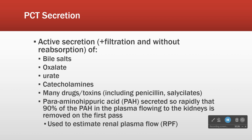Then there's a specialized one: PAH — para-aminohippuric acid — a specialized compound that we use to measure kidney function. It is fully secreted in the PCT, and I'll show you how that works and why it matters at the end of this talk. There's not a lot of active secretion in the PCT, but there is some.